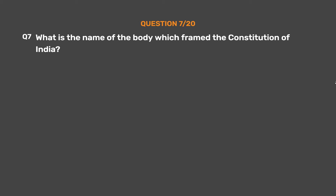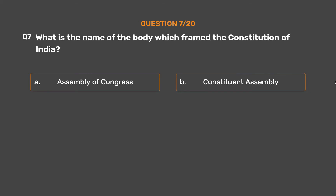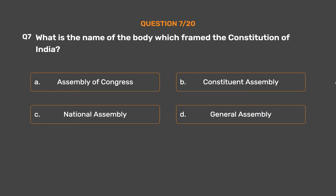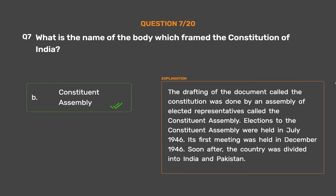Question 7: What is the name of the body which framed the constitution of India? Option A: Assembly of Congress. Option B: Constituent Assembly. Option C: National Assembly. The correct answer is Option B: Constituent Assembly. The drafting of the document called the constitution was done by an assembly of elected representatives called the Constituent Assembly. Elections to the Constituent Assembly were held in July 1946. Its first meeting was held in December 1946. Soon after, the country was divided into India and Pakistan.